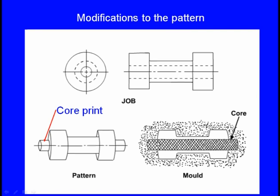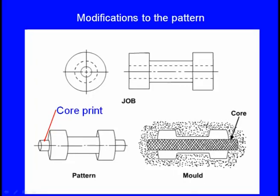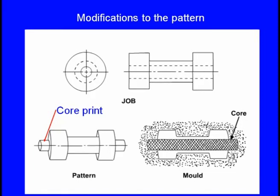The effective core starts from one point and extends to another, but if we make only that much core, how will it be supported? To support it, we extend the core further. This extended portion of the core needs a cavity to rest in — an extended cavity is made on each side, into which we place the extended portion of the core, and that is how the core is supported. The extended portion of the core on the pattern is known as the core print.